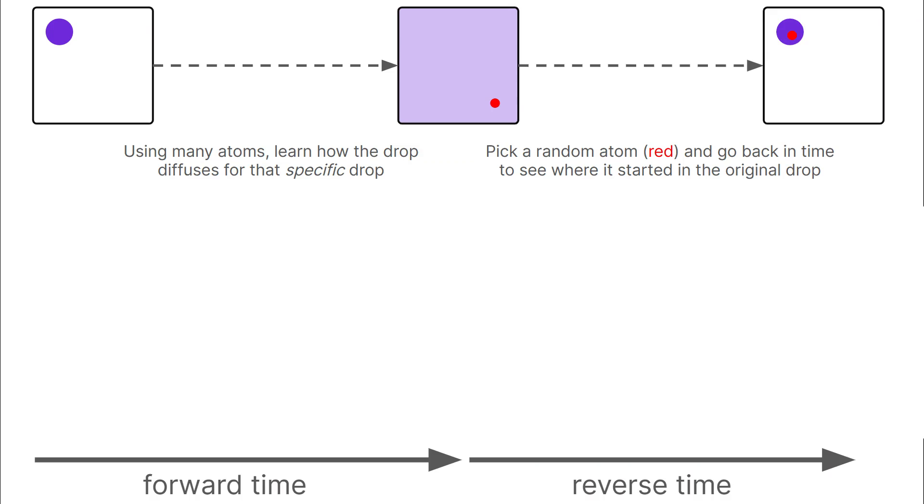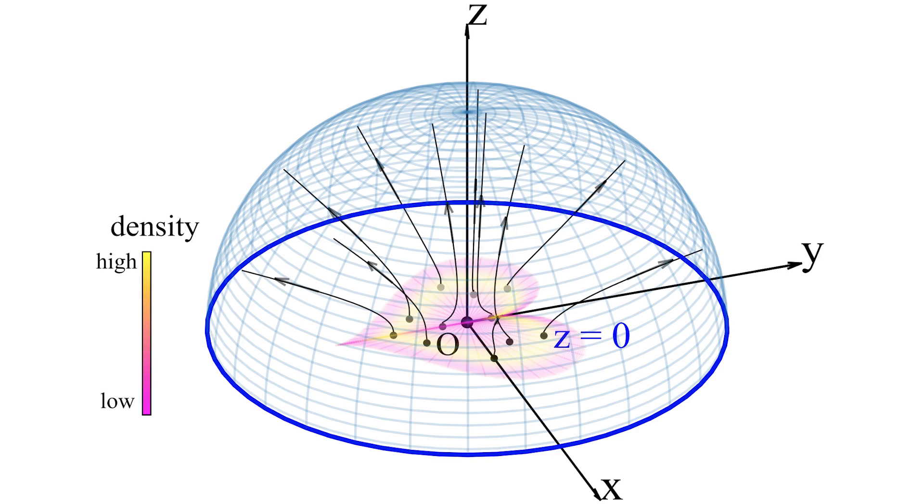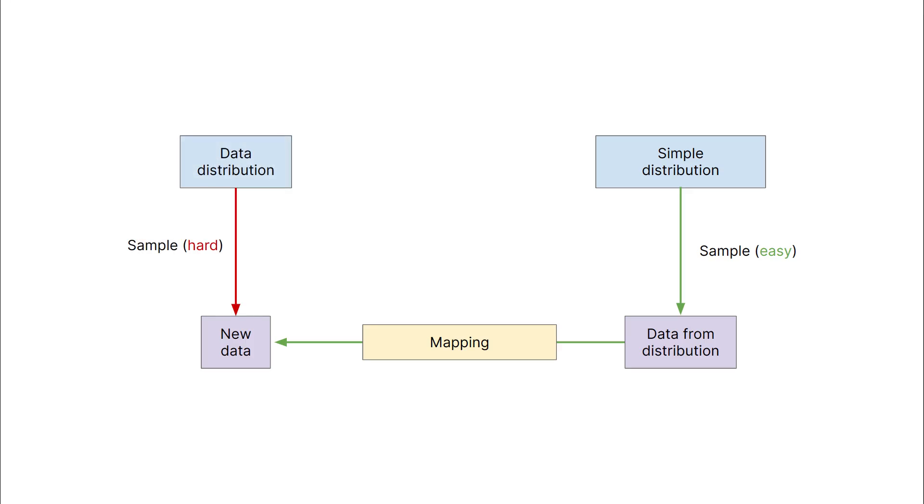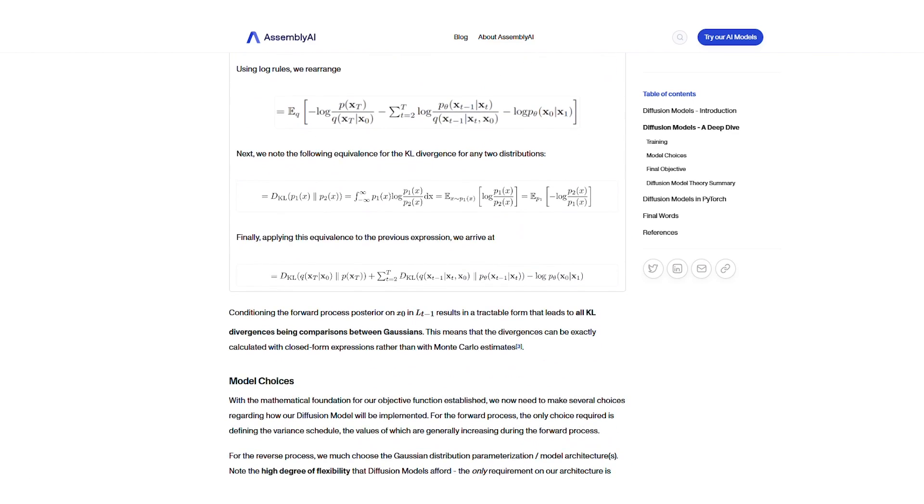By learning how the atoms diffuse for a particular drop, we can select a random atom in the uniform coloring and then go back in time to figure out where it started in the initial drop. Similarly, by training on images and learning how they diffuse, we can select a random image of Gaussian noise and go back in time to figure out where it started in the data distribution, i.e., generate a novel image. Just like how we observed electrostatics maps complicated data distributions into a simple circular distribution in PFGMs, here we observe that thermodynamics maps complicated distributions into Gaussian noise. We then use the same principles to sample and map rather than try to sample from the data distribution directly. If you want to take a closer look at how this works mathematically, feel free to check out the introduction to diffusion models on our blog.